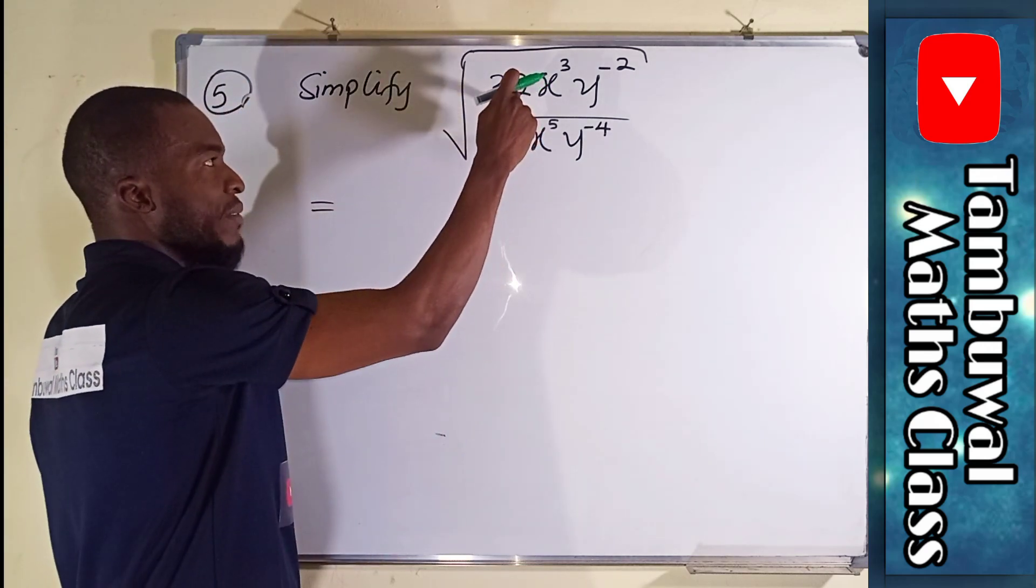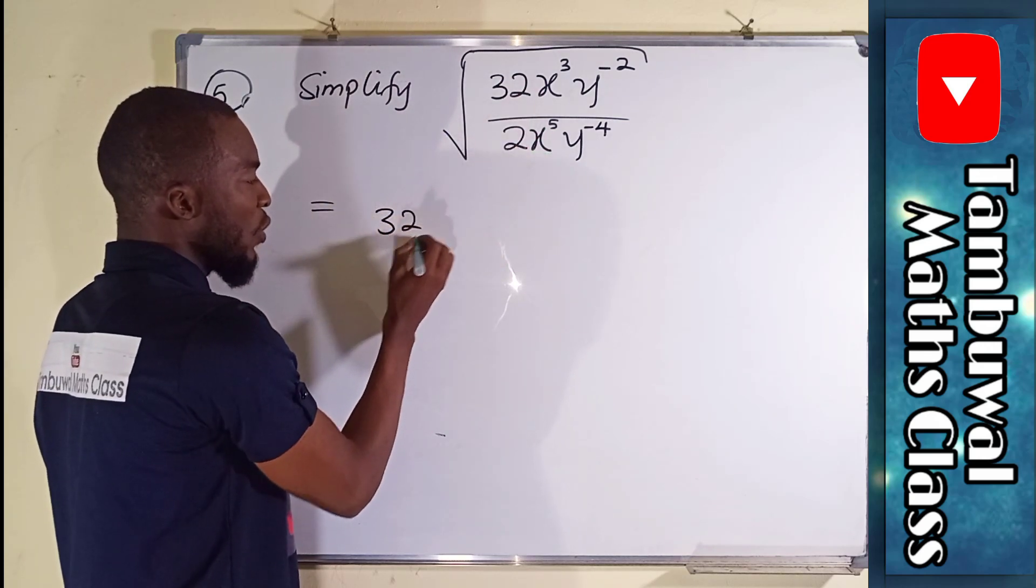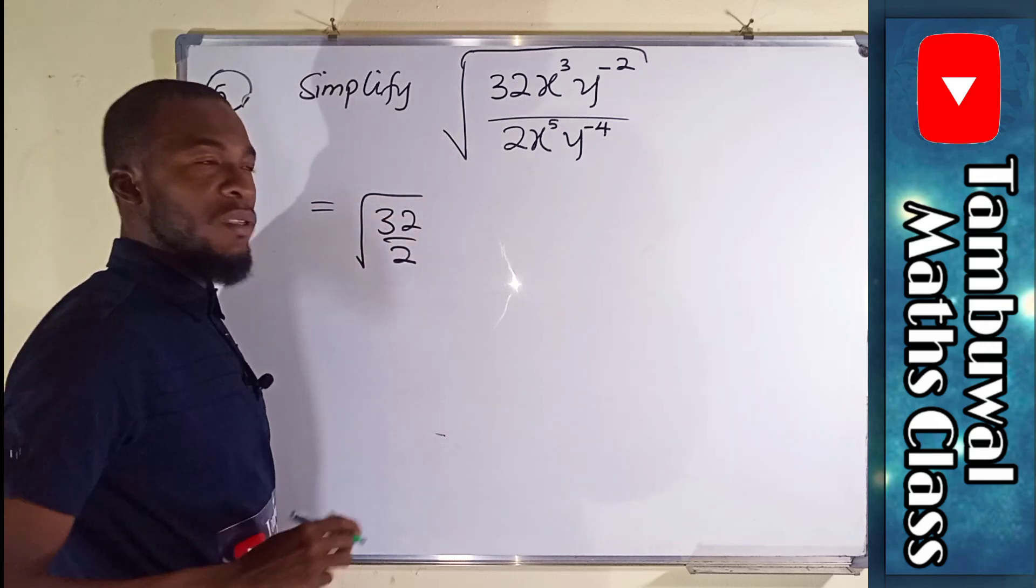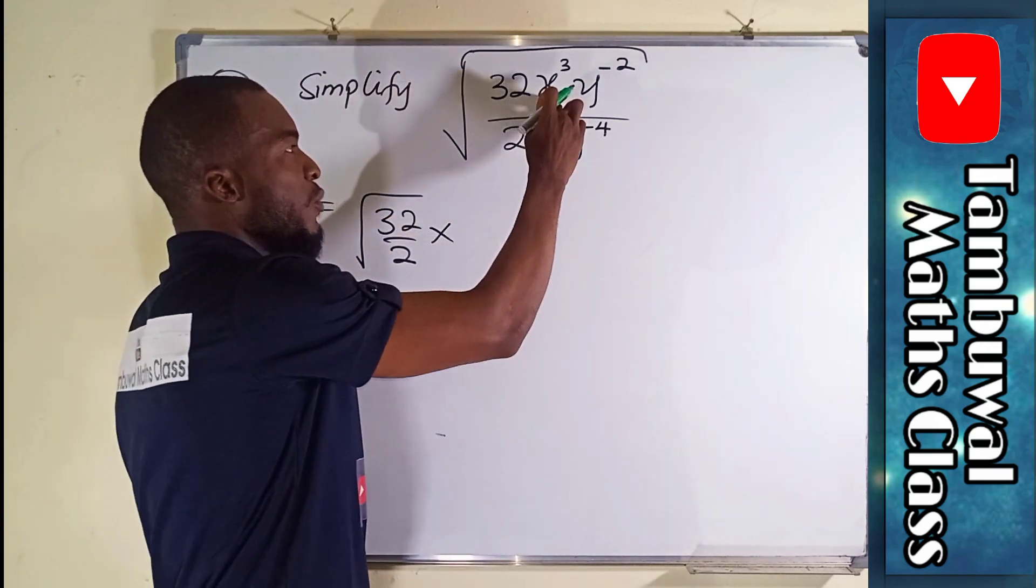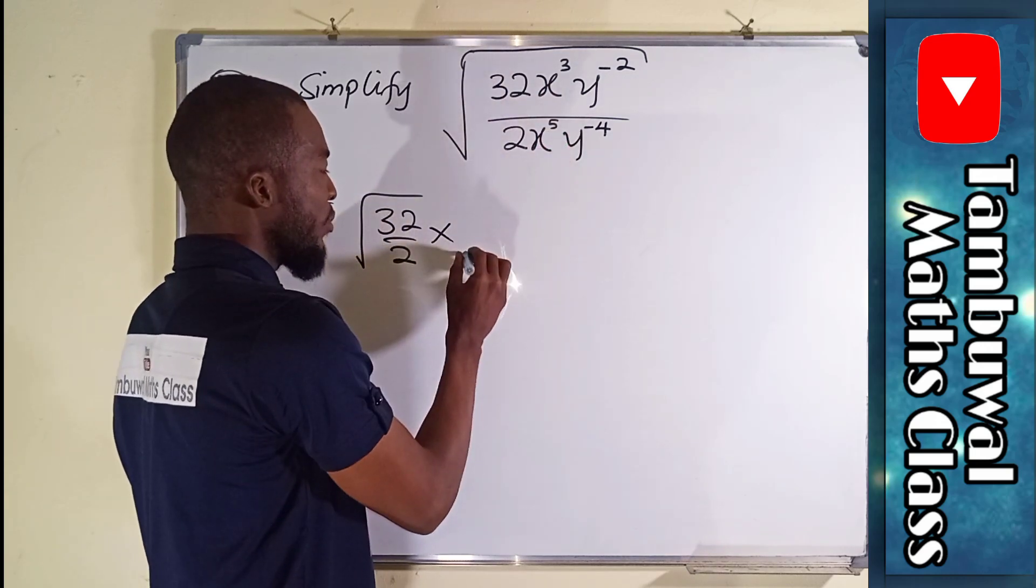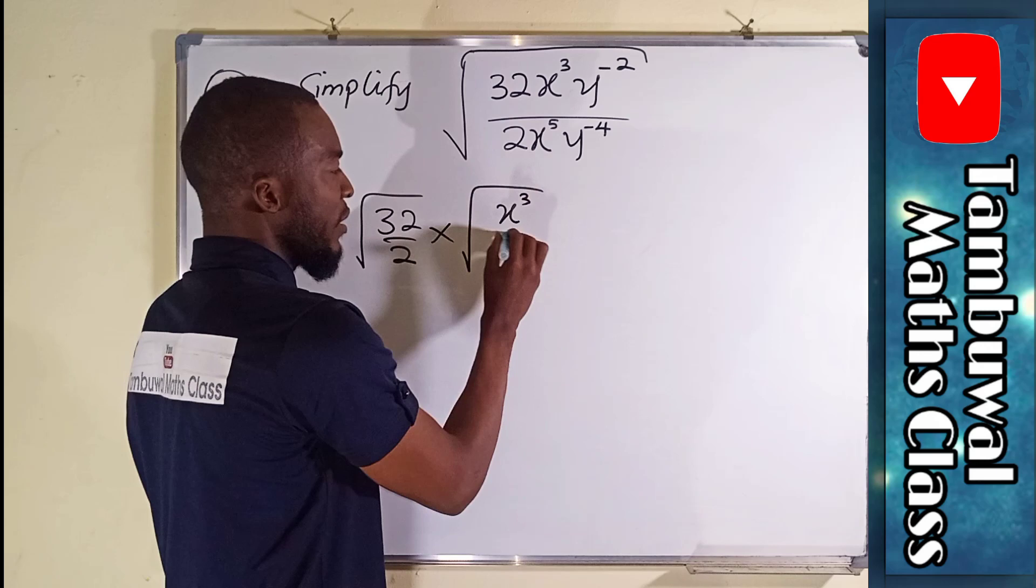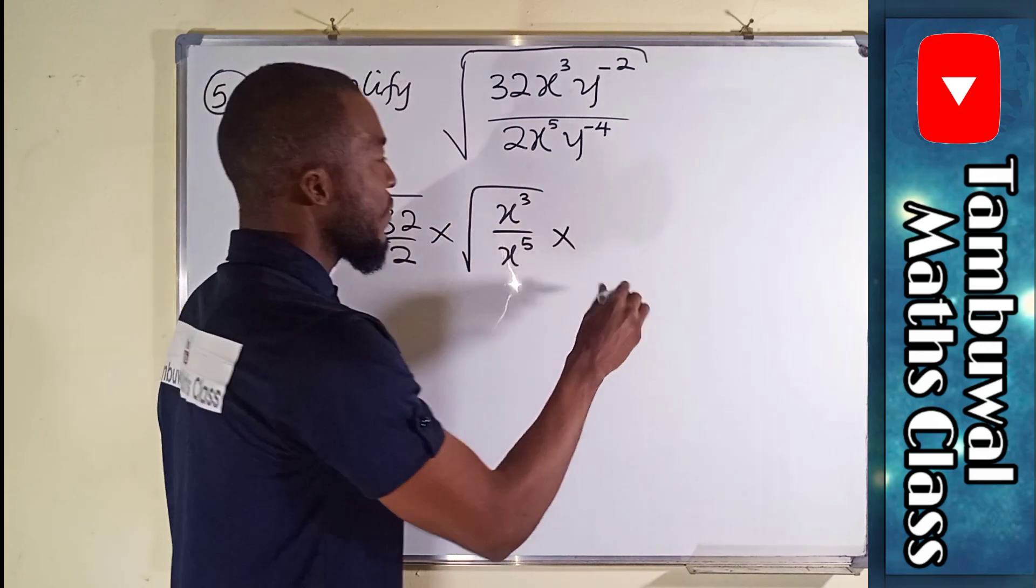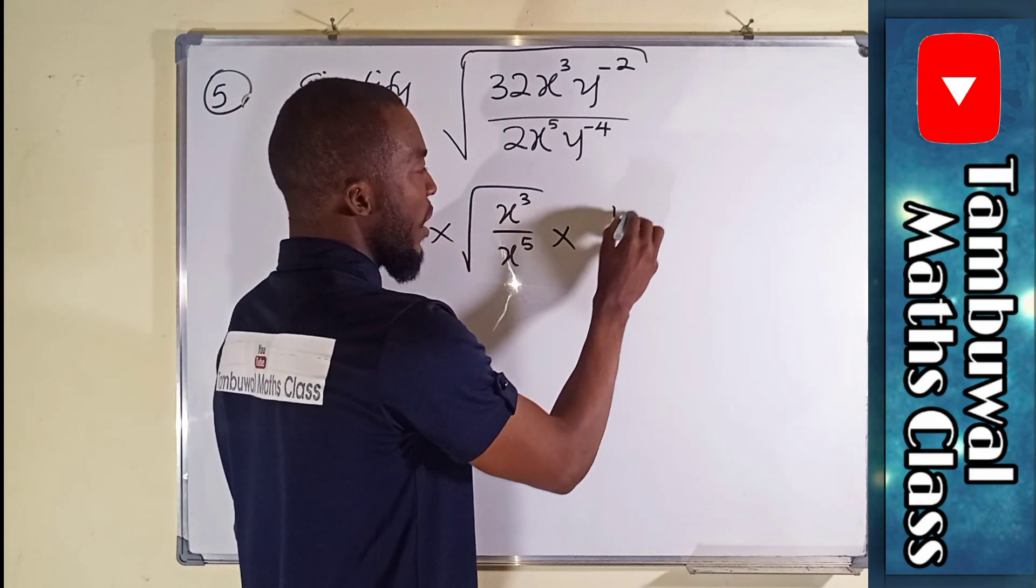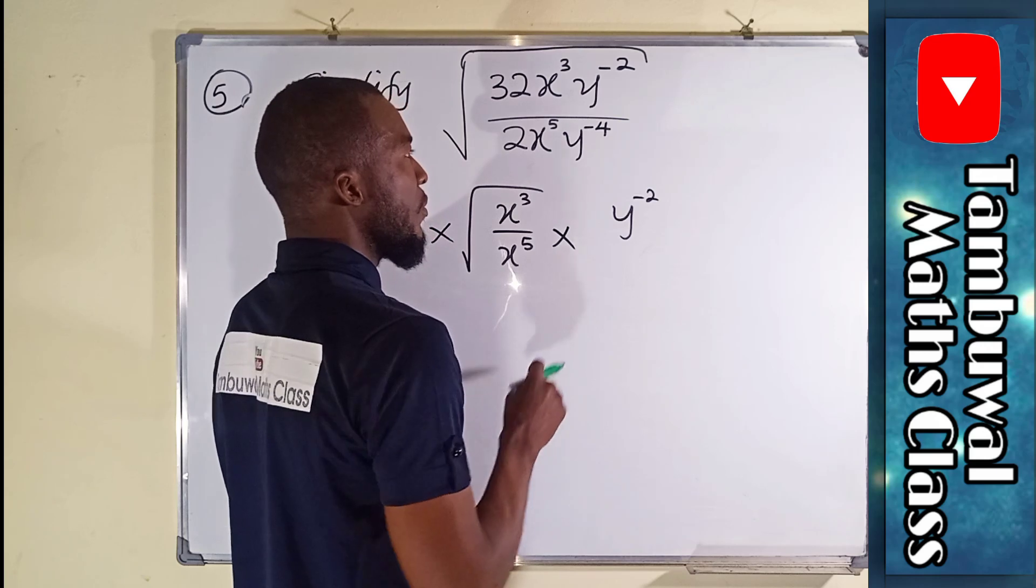Relate numbers by numbers. You can see we have 32 here and 2 here, so I will say 32 over 2 in the square root. We have x and x here, so I'll separate them. I will say x power 3 divided by x power 5.